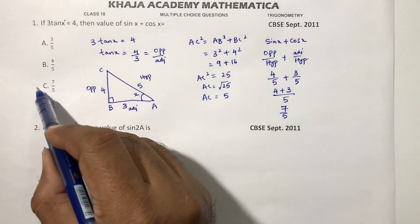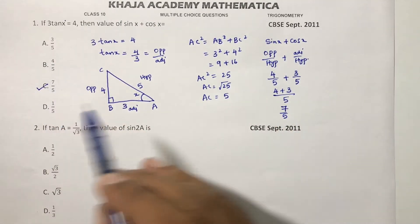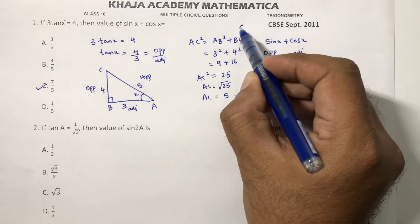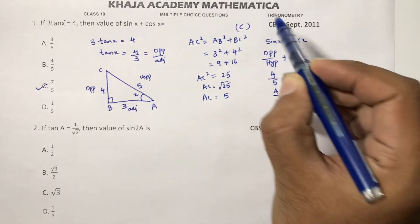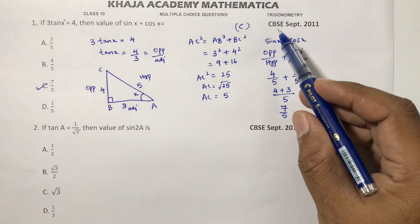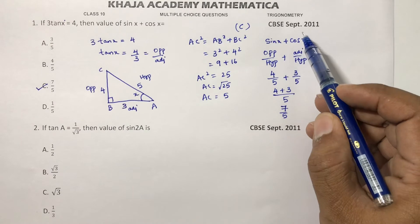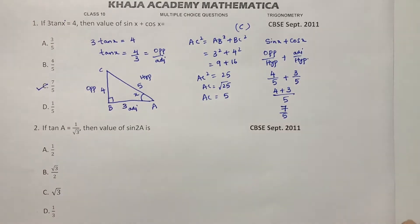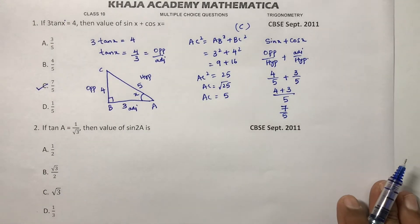So the answer for sin x plus cos x is 7 by 5. The correct option is C. This question was asked in CBSE boards, September 2011. Now next question.